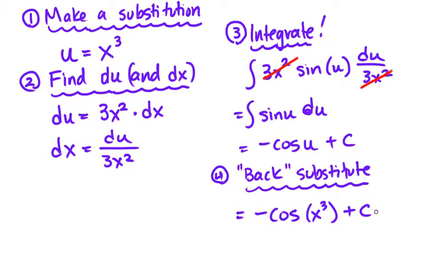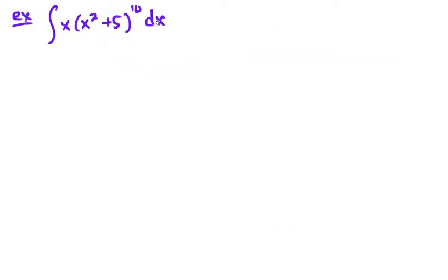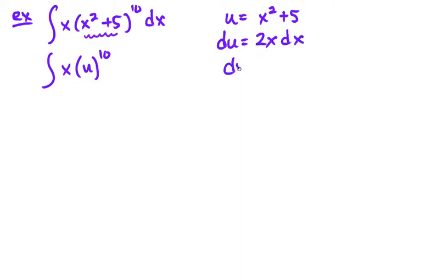Let's take a look at another example. So here's my indefinite integral, and I want to make a substitution. The best substitution is to make this part a lot less complicated. So I'm going to make that my u. That gives me x times u to the tenth. I need to figure out what that dx is worth. Well, du is 2x dx, and dx, therefore, is du over 2x.